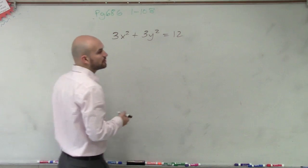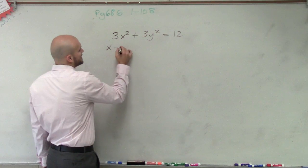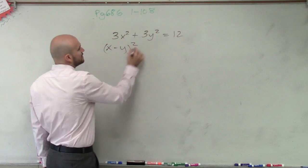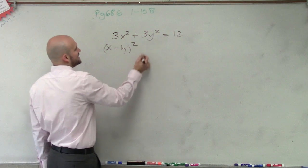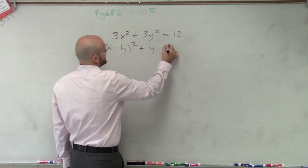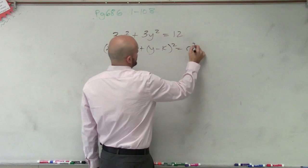Now, ladies and gentlemen, remember when we're graphing, we can write the standard form of a circle as x minus h squared plus y minus k squared equals r squared.